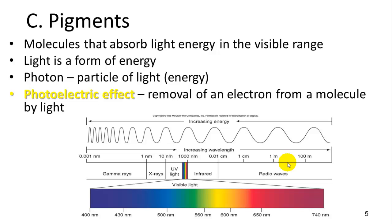The photoelectric effect means you can remove an electron from a molecule because of the energy from light. When a photon hits a substance, it causes an electron to be excited, and as it comes back down it gives off energy in the form of light — that's the photoelectric effect.